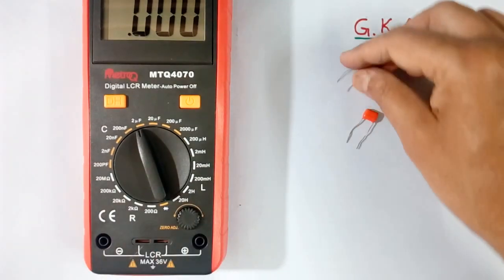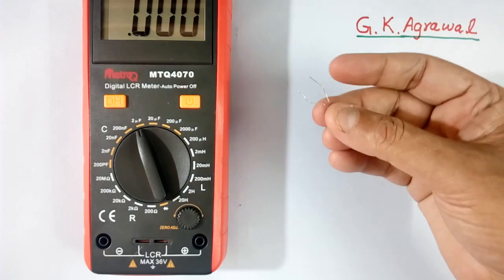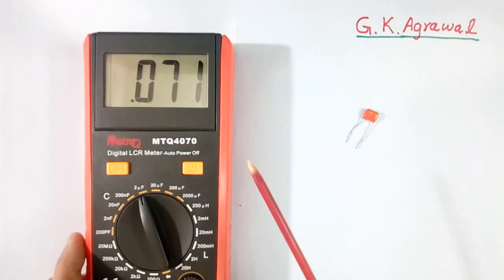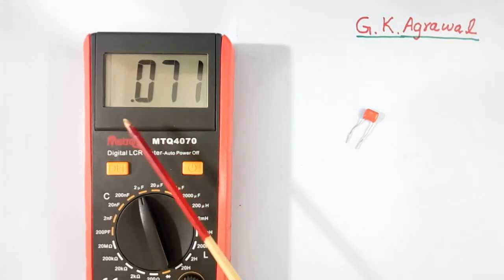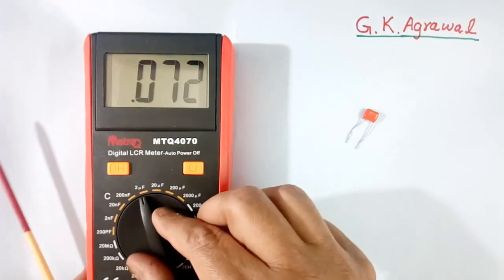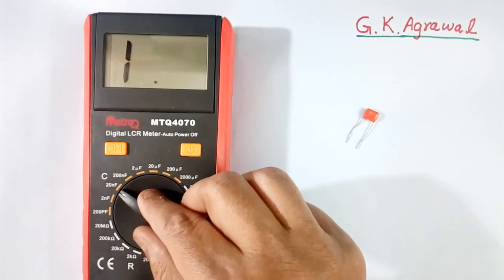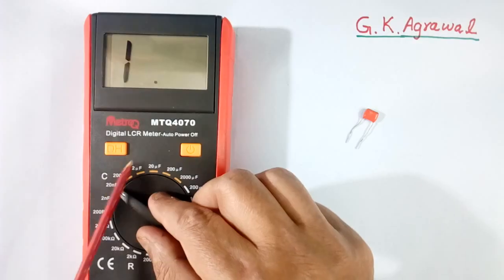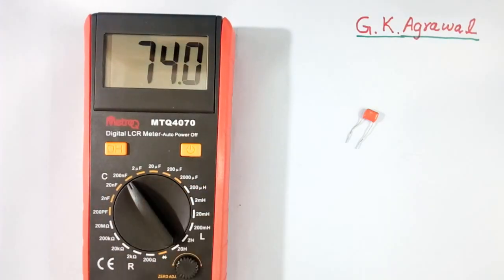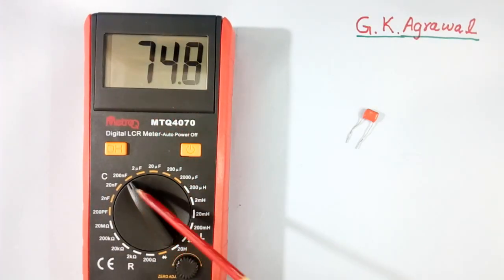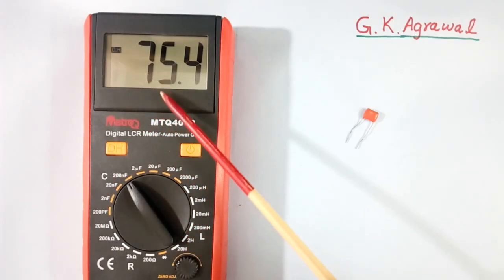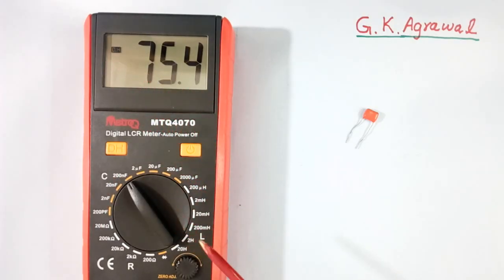Now I will connect the ceramic capacitor. This is reading 0.07 — I will reduce the scale. It is reading 1, which means I have to increase the scale. Now it is reading correctly: 74 nano faraday. This is the nano faraday scale. If you press this hold button, it will hold and will not change the value.